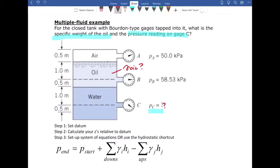I have here a few general steps on how to solve these problems. Step one is set the datum. Step two is calculate your Zs relative to the datum. Step three is set up a system of equations or use the hydrostatic shortcut. We're actually going to use a combination of the system of equations and the hydrostatic shortcut in this particular problem.